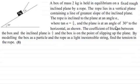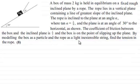The plane is at an angle of 30 degrees to the horizontal as shown. The coefficient of friction between the box and the inclined plane is one third, and the box is on the point of slipping up the plane. By modelling the box as a particle and the rope as a light inextensible string, find the tension in the rope for eight marks.